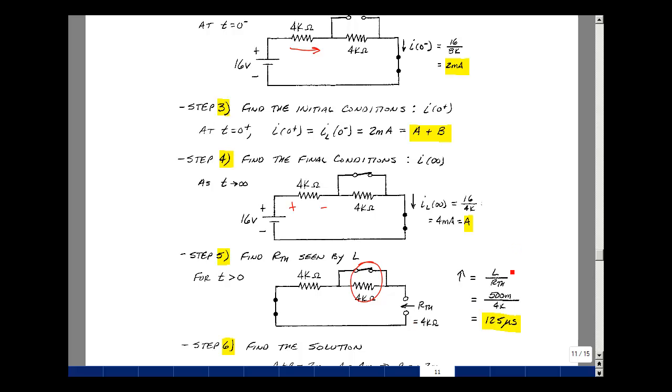So our time constant is L over R Thevenin. And that's going to be 500 millihenries now divided by 4k. That's 125 microseconds.